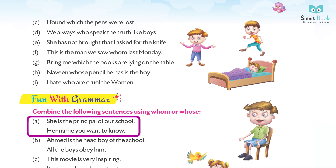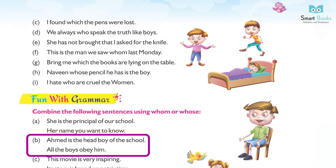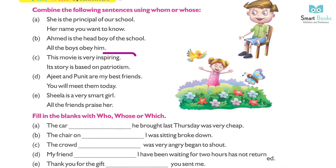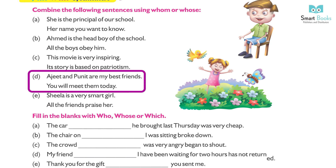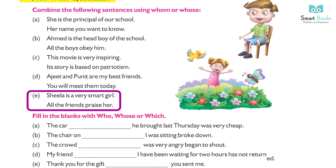Fun with Grammar — Combine the following sentences using whom or whose. (a) She is the principal of our school; her name you want to know. Answer: She is the principal of our school whose name you want to know. (b) Ahmad is the head boy; all the boys obey him. Answer: Ahmad is the boy whom all the boys obey. (c) This movie is very inspiring; its story is based on patriotism. Answer: This movie is very inspiring, whose story is based on patriotism. (d) Ajit and Paneet are my best friends; you will meet them today. Answer: Ajit and Paneet are my best friends whom you will meet today. (e) Sheila is a very smart girl; all the friends praise her. Answer: Sheila is a very smart girl whom all the friends praise.